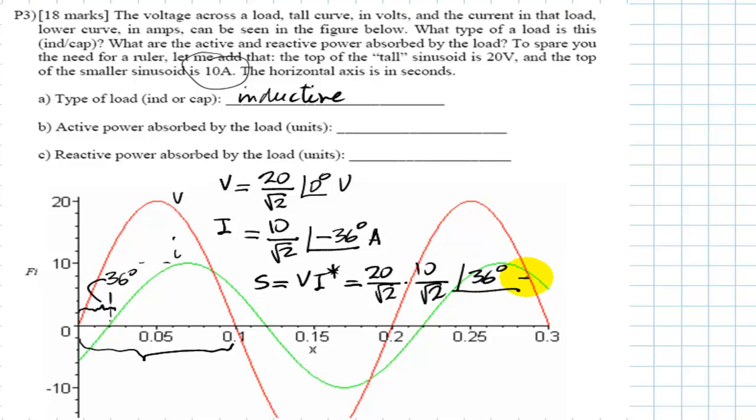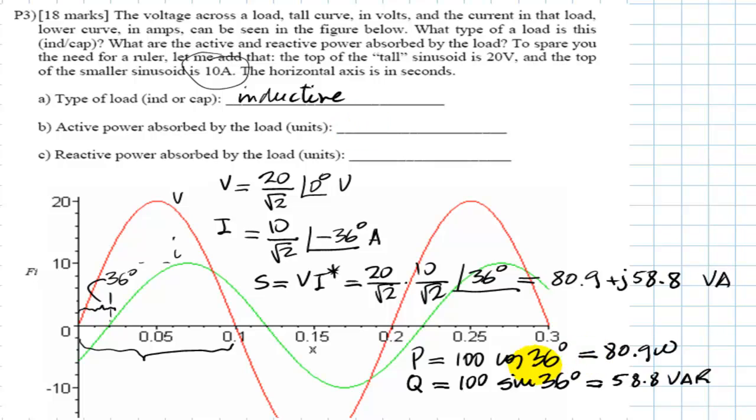And that has a real part and an imaginary part, which is, it would be 200 divided by 2. A hundred cosine of 36. And that is the active power. This value here. And we get the active power absorbed by the load is 80.9 watts, which we write here. 80.9 watts.